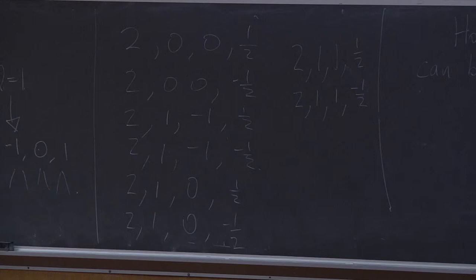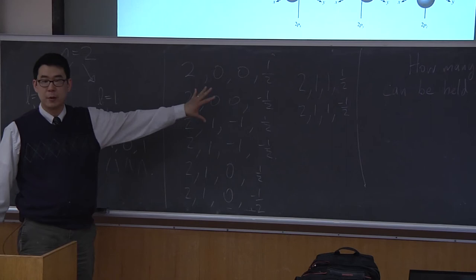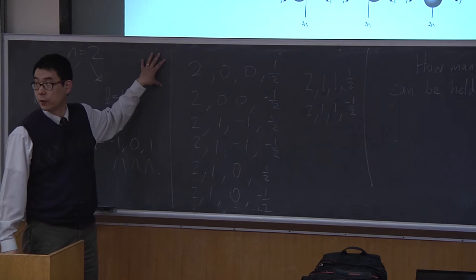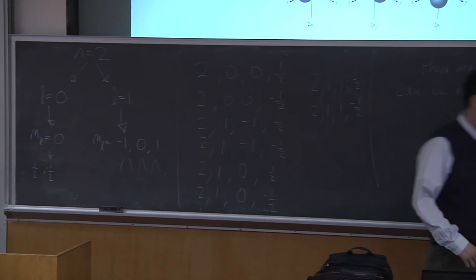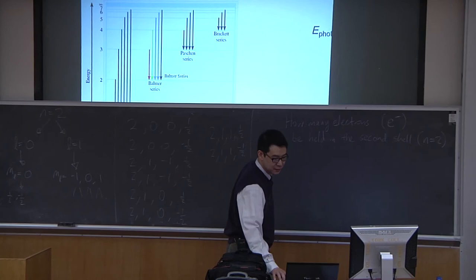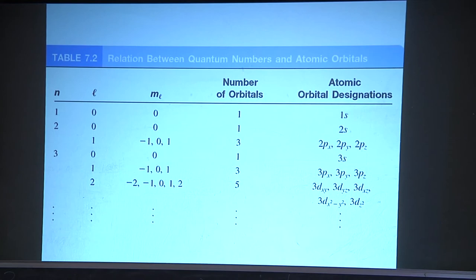That's 8 unique sets of quantum numbers. Note that how many are possible is not the same as how many are in a specific element. If an element had all of these filled, it would also have the n=1 shell filled.